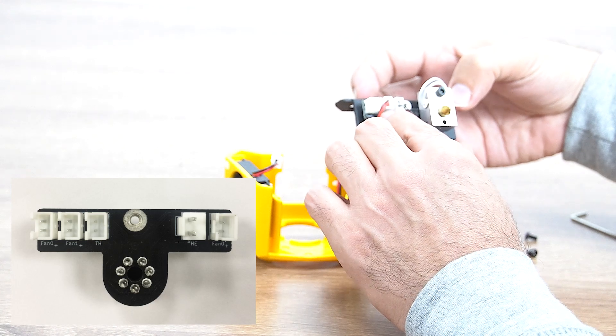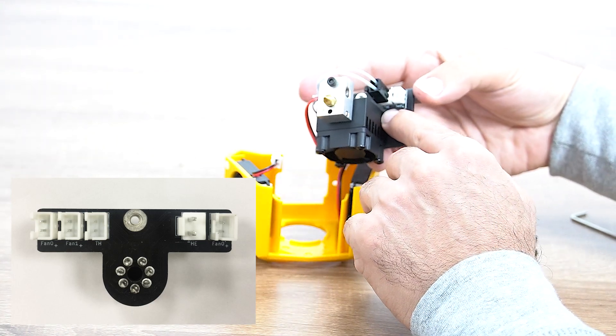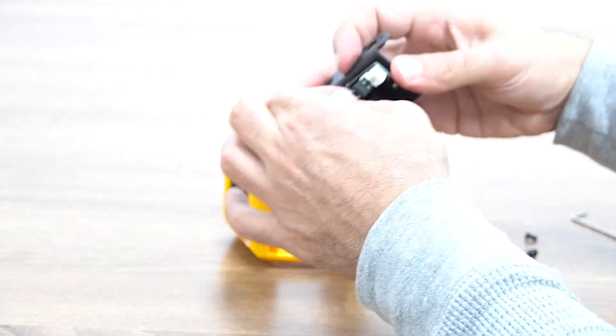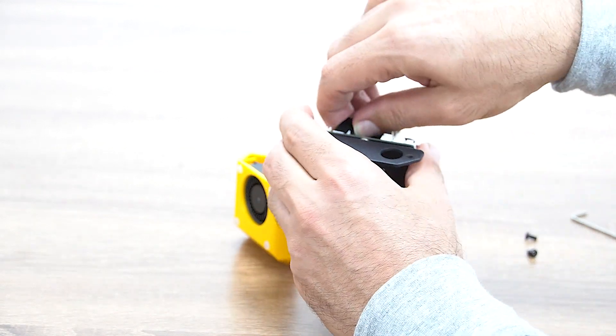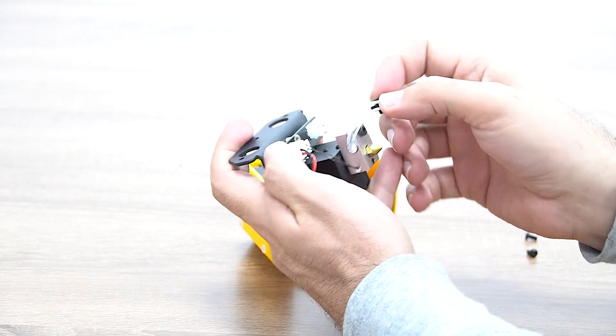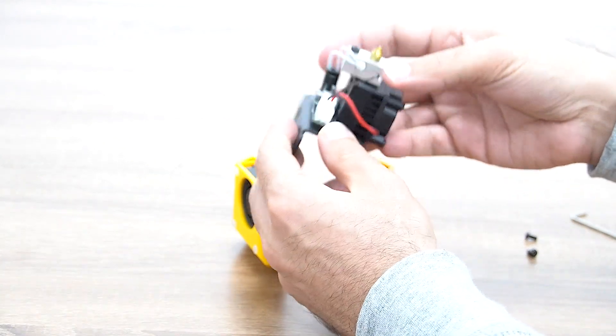For the thermistor, the letters are TH, and for the heating tube, the letter is HE. So don't worry if you just unplug it or in case you need to replace them, you can simply unplug and plug it back. It's similar to the rest, it's very easy and simple.